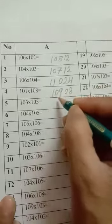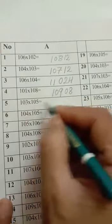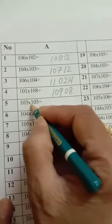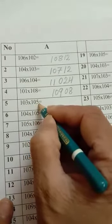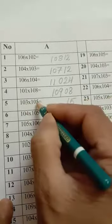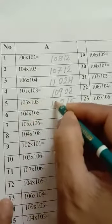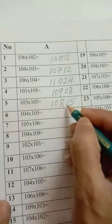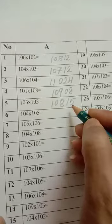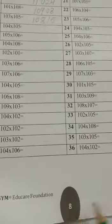Question number 5: 103 multiply by 105. First take, you multiply 5 3s are 15. Then 5 plus 3 is 8. Then 10. Answer is 10815. Same trick we have complete page number 8.